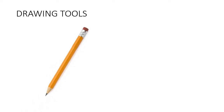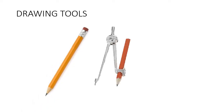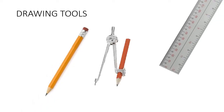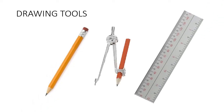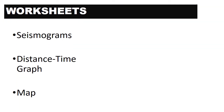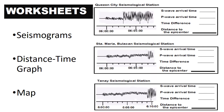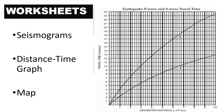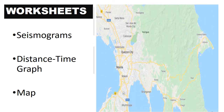For this activity, we will be needing the following drawing tools: a pencil, a drawing compass, and a ruler. For the worksheets, we will be needing three seismograms, a distance-time graph, and a working map.